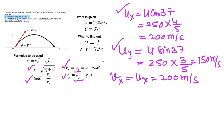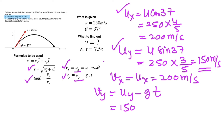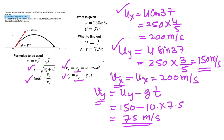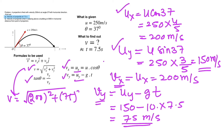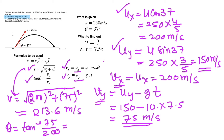To find vy we use the equation of motion for constant acceleration: vy = uy − g·t = 150 − 10 × 7.5 = 75 m/s. The magnitude of velocity is v = √(vx² + vy²) = √(200² + 75²) ≈ 213.6 m/s. The angle theta = tan⁻¹(vy/vx) = tan⁻¹(75/200) = tan⁻¹(0.375) ≈ 20.5 degrees.